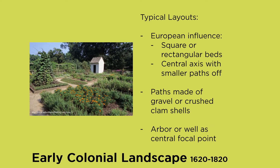From what I read, a lot of early settlers were basing their layouts on the countries of their origins, so we see a very strict European influence for these gardens. Highly geometric, square or rectangular beds. There was often a central axis running down the garden with smaller paths coming off of that. The paths themselves were often gravel; near the coast they could be crushed clamshells or even just compacted earth. Oftentimes there was also a focal point in the garden, whether it was some type of arbor or even just a water well.